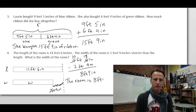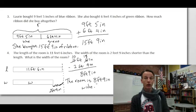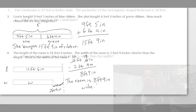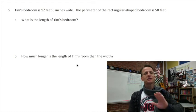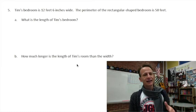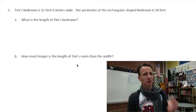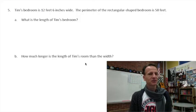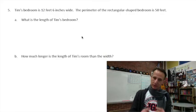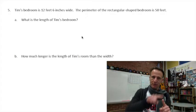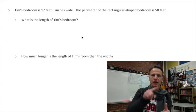The room is eight feet nine inches wide — not double-wide! On to number five. I'll warn you I have a problem with this problem. Tim's bedroom is 12 feet six inches wide; the perimeter of the rectangular-shaped bedroom is 50 feet. What is the length, and how much longer is the length than the width?